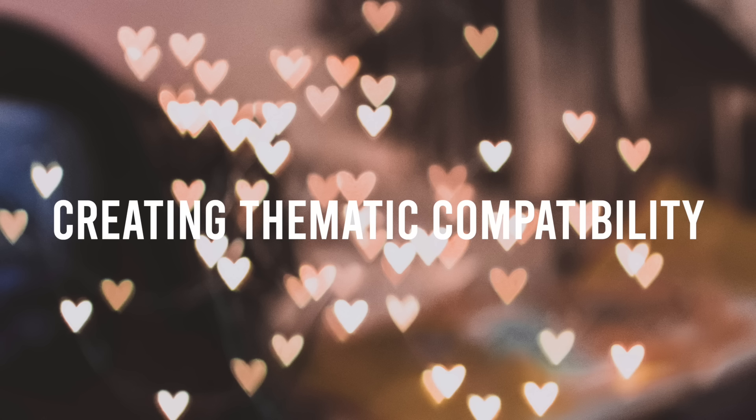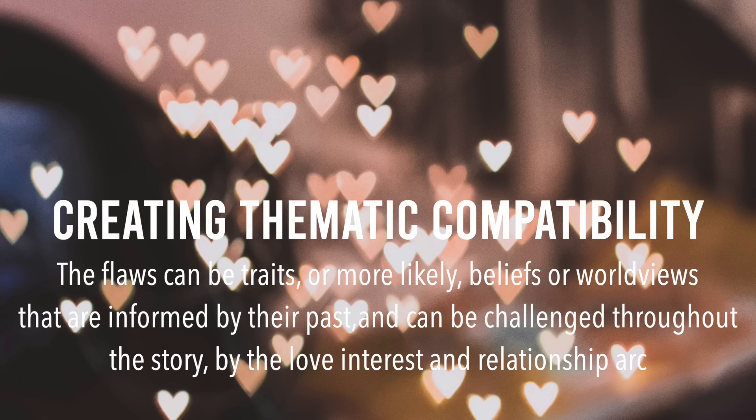What I like to think of is creating thematic compatibility, and the best way to do that is to create a sense of mutual growth. Whatever flaws the protagonist is actively struggling with in the book, we can see those flaws be challenged and then see them starting to grow from the balance that the love interest provides and vice versa. The love interest will equally be challenged with their own flaws and based on this sense of balance from the protagonist there will be active growth for them as well.